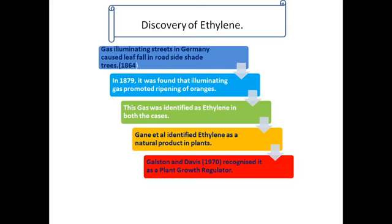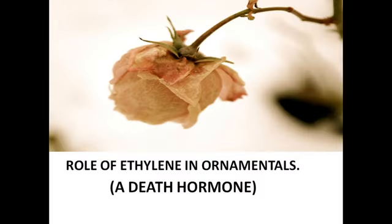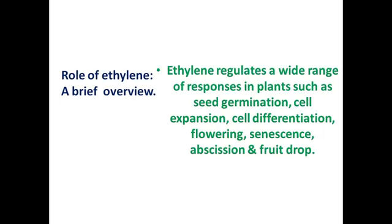In 1970, Galston and Davis recognized ethylene as a plant growth regulator, placing it under the category of phytohormones like auxins and gibberellins. Ethylene is also called the death hormone because it causes epinasty, senescence, abscission, and aging — it causes leaves to turn yellow and fall. A brief overview of its roles includes seed germination, cell expansion, cell differentiation, flowering, senescence, abscission, and fruit drop.